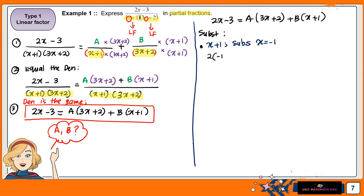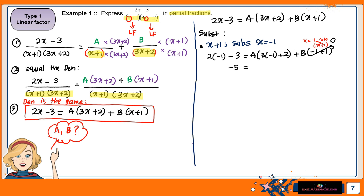Substituting x = -1: the left-hand side gives 2(-1) minus 3. On the right-hand side, A times (3(-1) plus 2) plus B times ((-1) plus 1). The B term becomes 0 because it comes from the same factor x plus 1. So we get negative 5 equals negative A, therefore A equals 5.